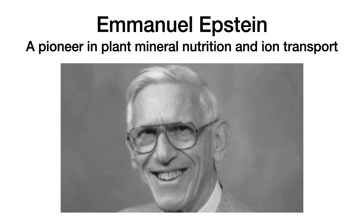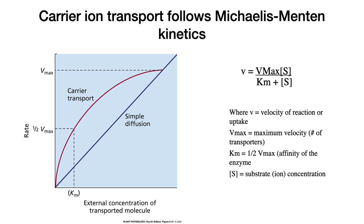This is a picture of Emanuel Epstein. He's a mentor of mine — I worked in his laboratory at one time. He is a member of the National Academy of Science, and he was a pioneer in plant mineral nutrition and ion transport. I'm going to highlight some of the things that he discovered. The thing that made Emanuel Epstein probably most famous was the discovery that ion transporters were enzymes or proteins.